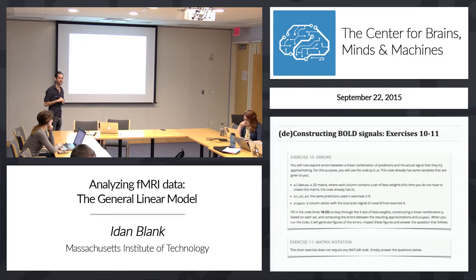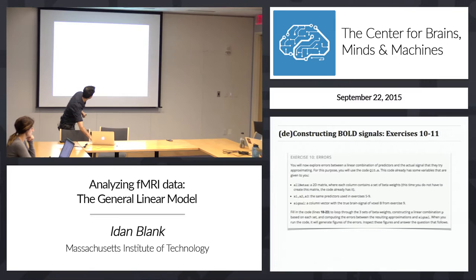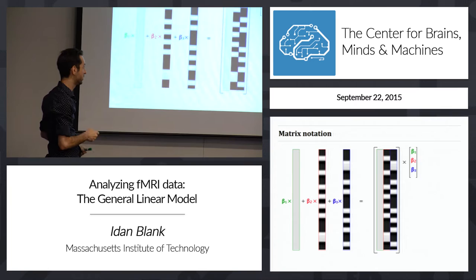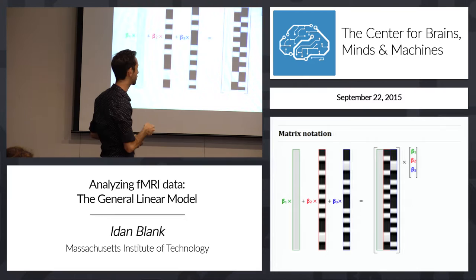So remember, a matrix multiplied by a vector means exactly this: first beta multiplied by the first column, second beta by the second column, all the way until the last beta multiplied by the last column. So it goes column-wise, and then you add all of them together.